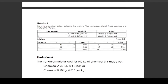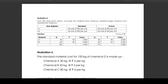Illustration number five. From the following given data, calculate the material price variance, material usage variance, and material mix variance. Raw material A and B — standard units and standard prices are given, and for both materials the actual quantity and actual price are also given. You are required to calculate the material price variance, usage variance, and mix variance for this illustration.